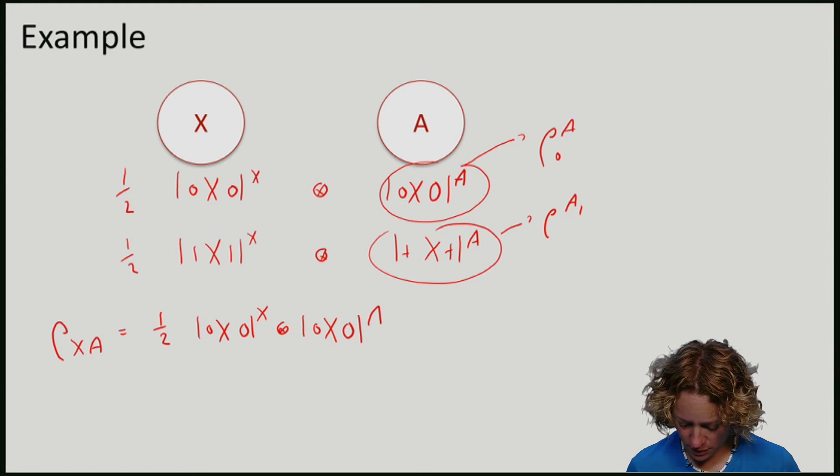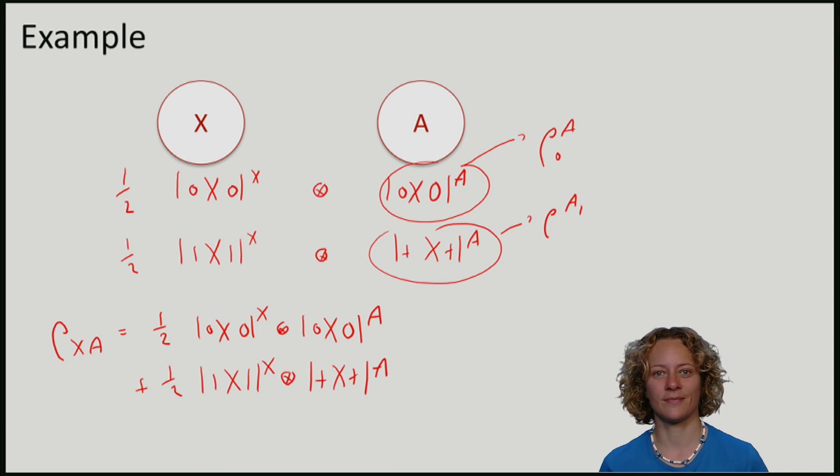plus half times 1, 1 on X plus 1 on A. This is a classical quantum state.